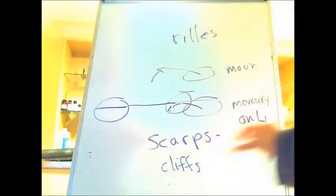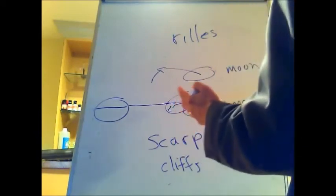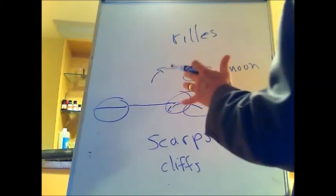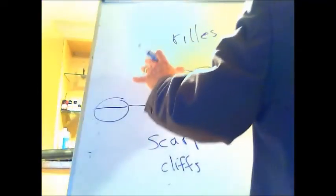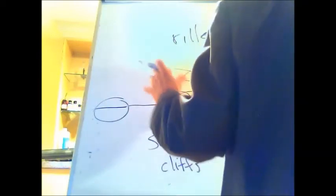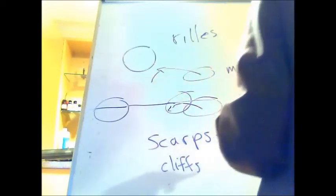The current theory of how scarps formed is that when Mercury was cooling and its surface was starting to harden, as it continued to cool the interior began to shrink. If you imagine something cooling with an outer shell, as the inside shrinks, the outer surface is going to pucker and wrinkle. So the scarps are thought to be wrinkles in the surface caused by contraction of the inner part of the planet as it cooled down.